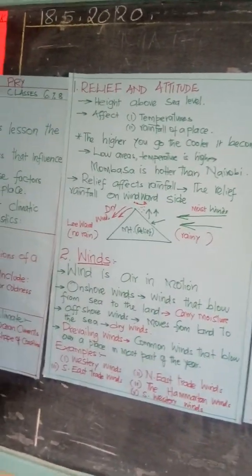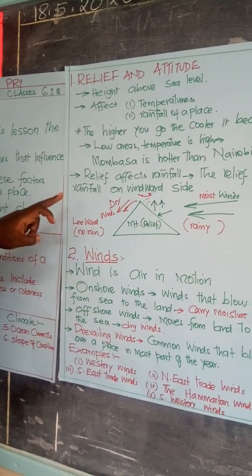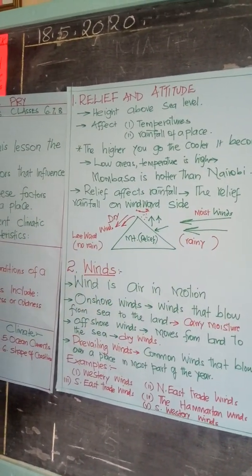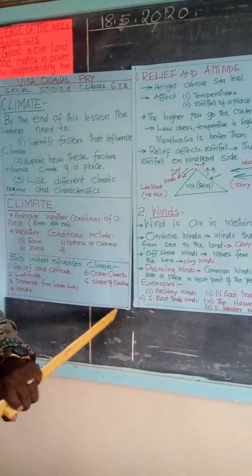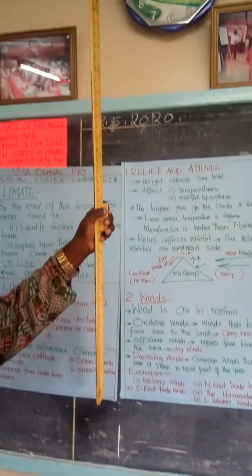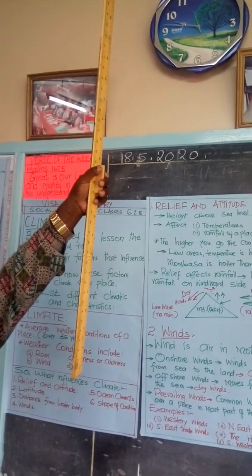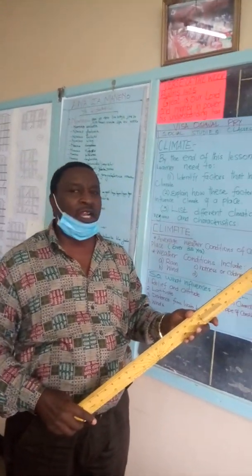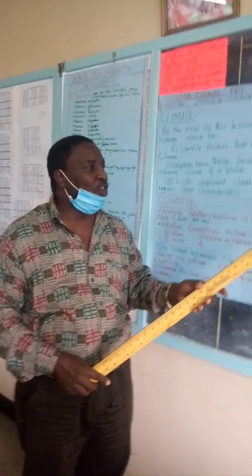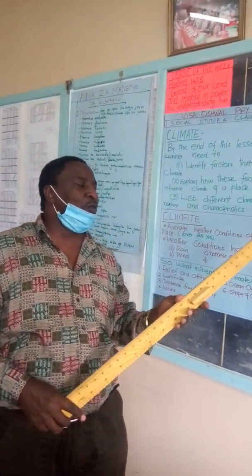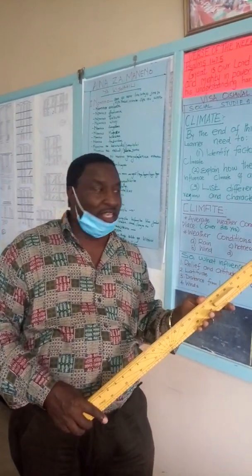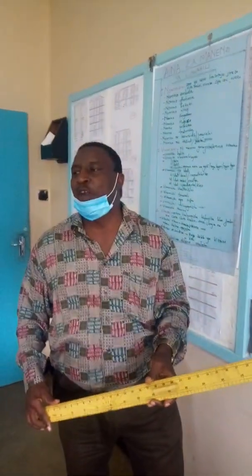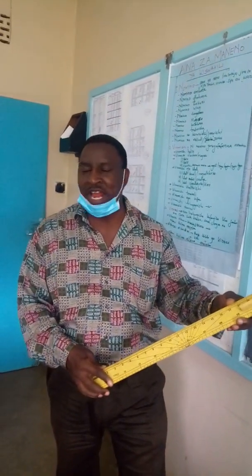Relief will also affect rainfall. Relief rainfall occurs on the windward side of a mountain. When the winds come, they hit the mountain and the air rises. It reaches cooler points — that is where condensation occurs. The air condenses, forms clouds, and eventually rainfall falls. The winds then cross over to the leeward side as dry winds. This is how relief and altitude affect the climate of a place — some places are wet, others are dry.